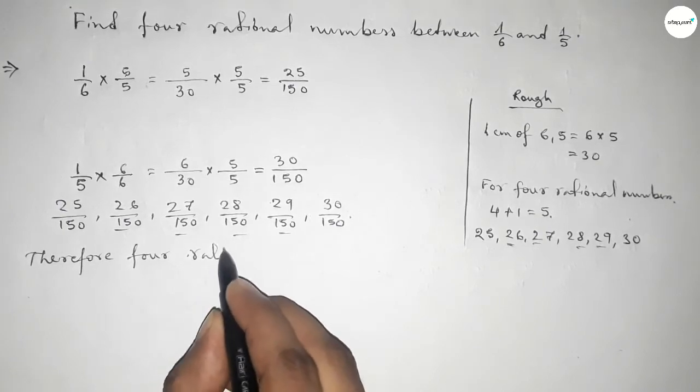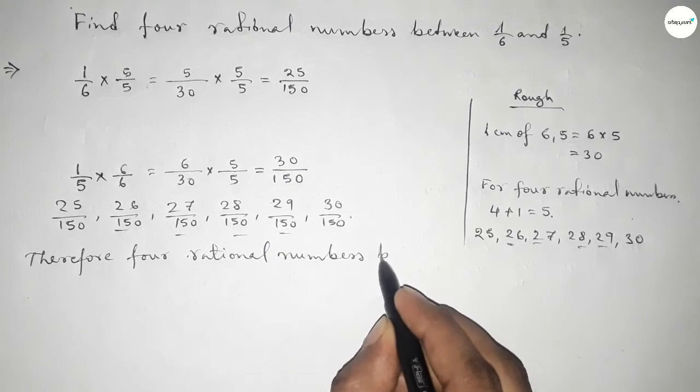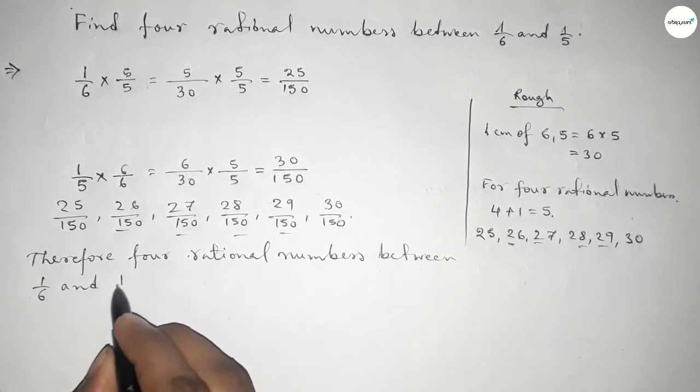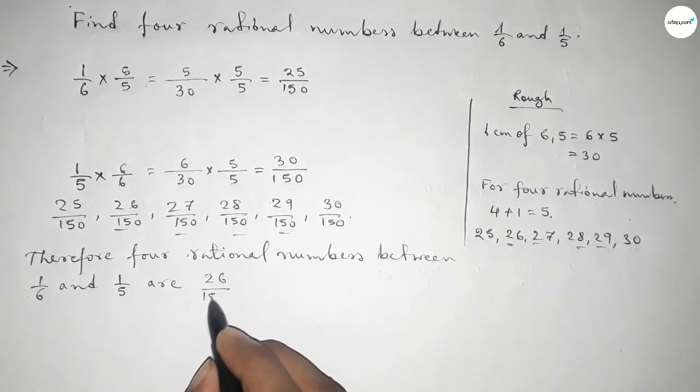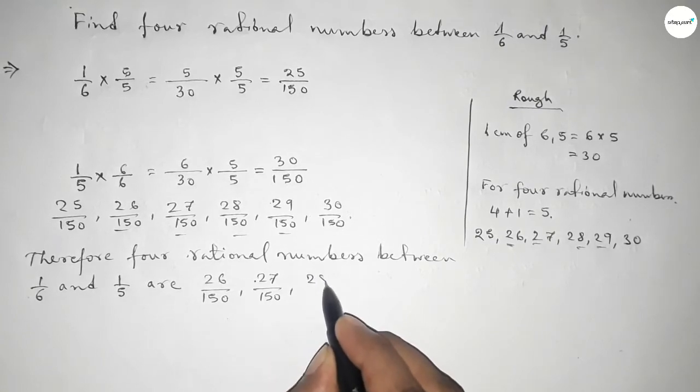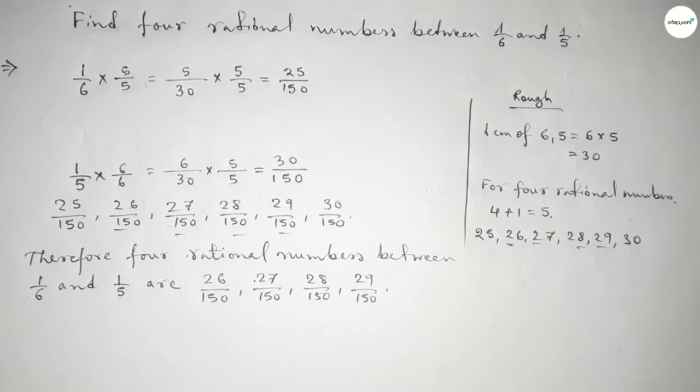Therefore, four rational numbers between 1 over 6 and 1 over 5 are 26 over 150, 27 over 150, 28 over 150, 29 over 150. So this is the process to find out four rational numbers between 1 over 6 and 1 over 5.